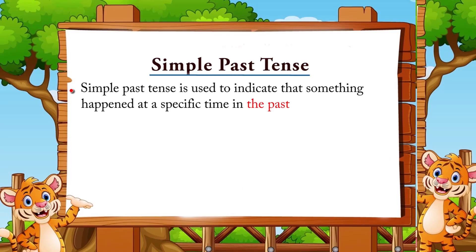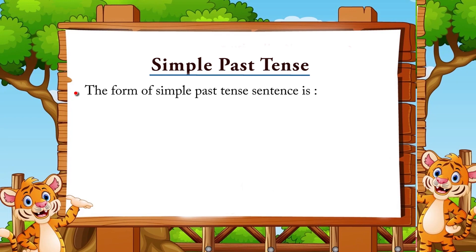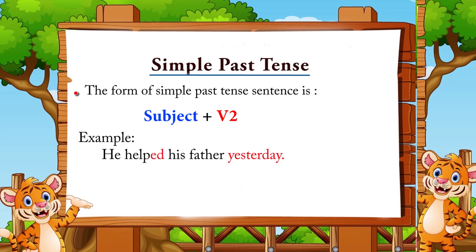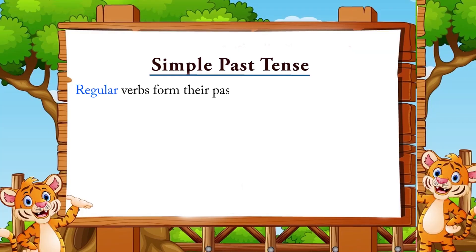In this lesson, you have learned about simple past tense. Simple past tense is used to indicate that something happened at a specific time in the past. To make a simple past tense sentence, we use the past form of a verb. The form of simple past tense is subject plus verb 2. Example: He helped his father yesterday. Regular verbs form their past tense by adding -d or -ed.